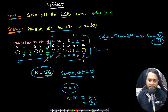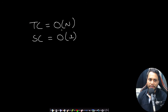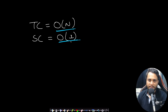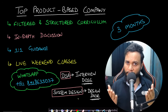We parse the entire string exactly once, so the time complexity is O(n). We use no extra space, so the space complexity is O(1). Let's now look at the code.